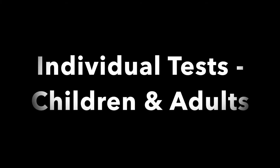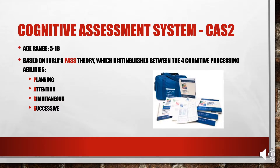Moving on to tests for older children and adults. The Cognitive Assessment System, CAS2, is used for children ages 5 to 18. It's based on Luria's PASS theory, which distinguishes between four cognitive processing abilities: Planning, Attention, Simultaneous processing, and Successive processing — that's what PASS stands for. You can remember that PASS goes with CAS.